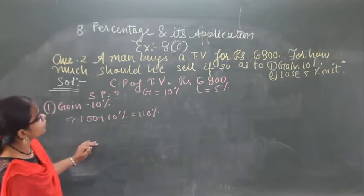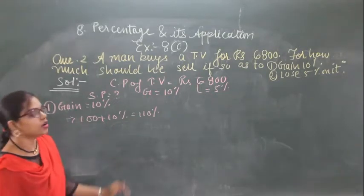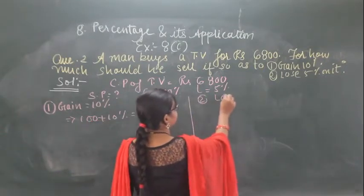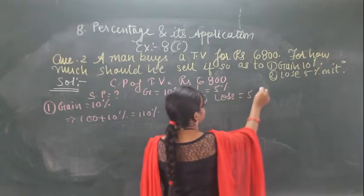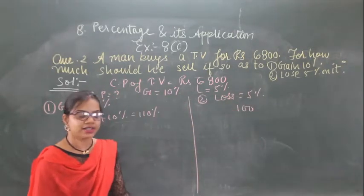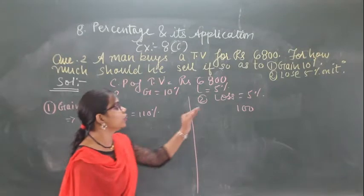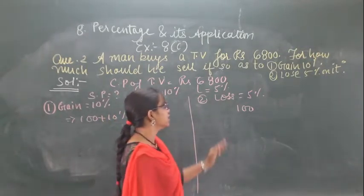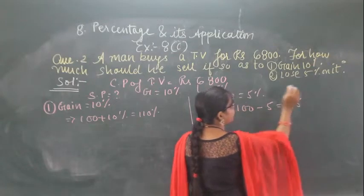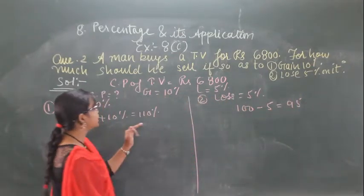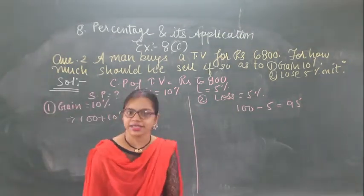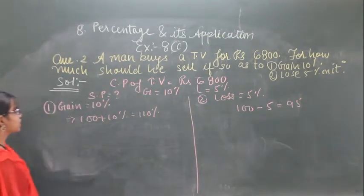For the second condition, loss is given as 5%. In gain we add and in loss we subtract with the percent. So 100 minus 5 is 95%. Here it is getting 110% because the sale is at 10% gain, and here it is getting 95% because there is a loss.